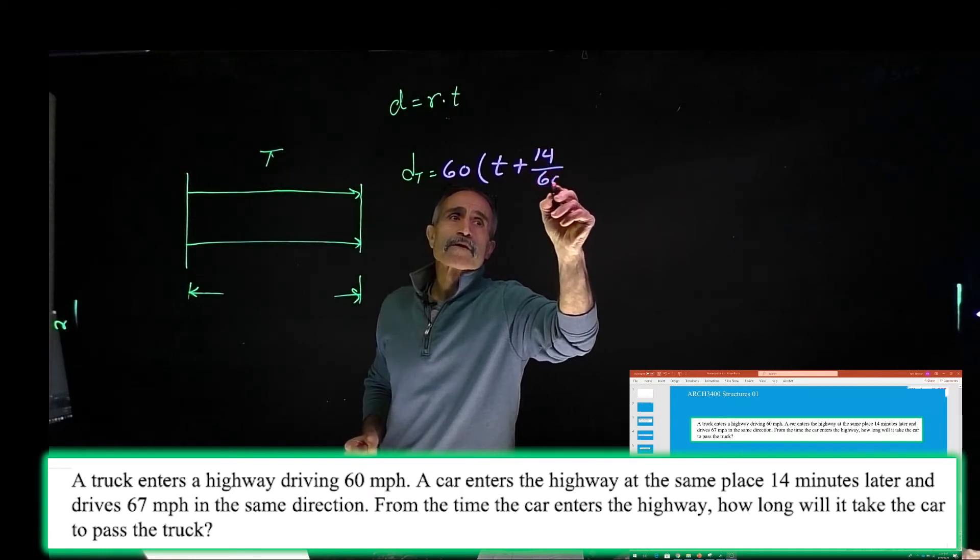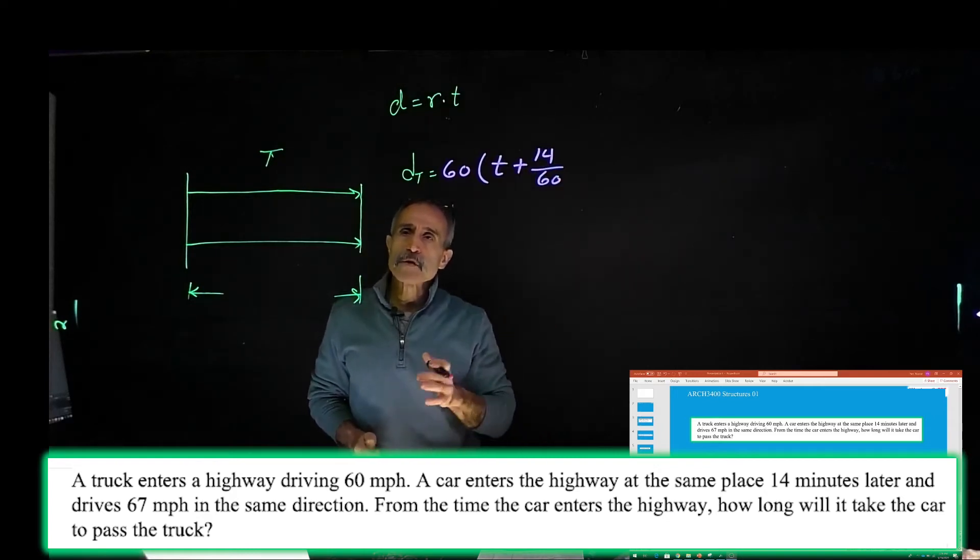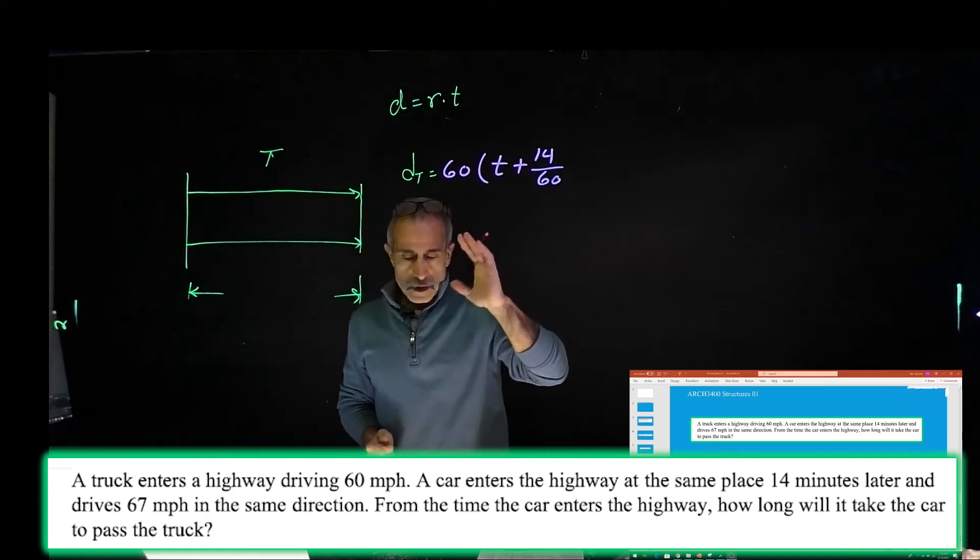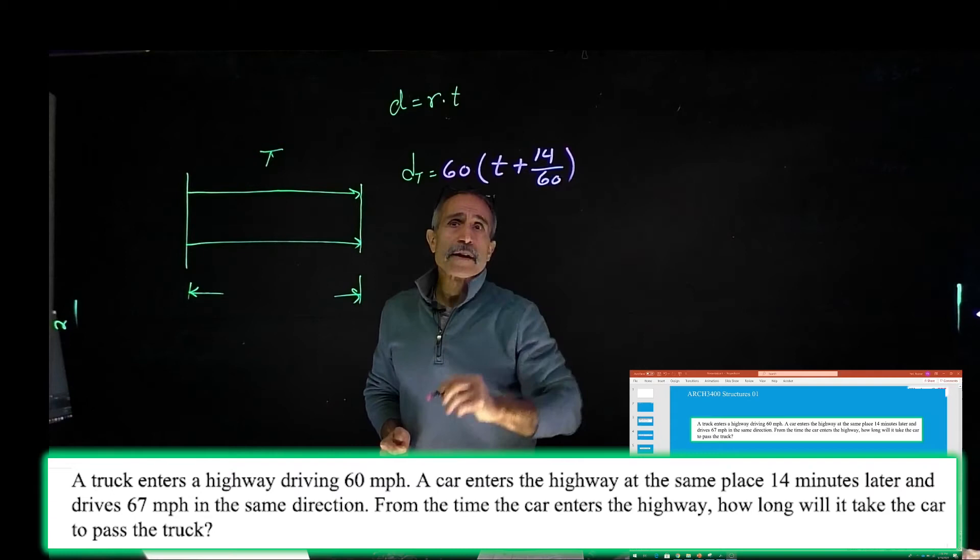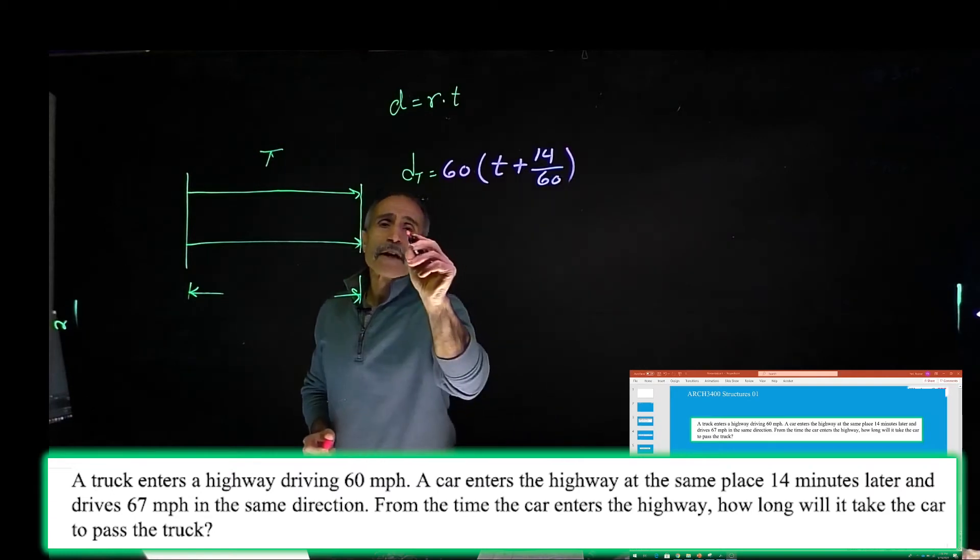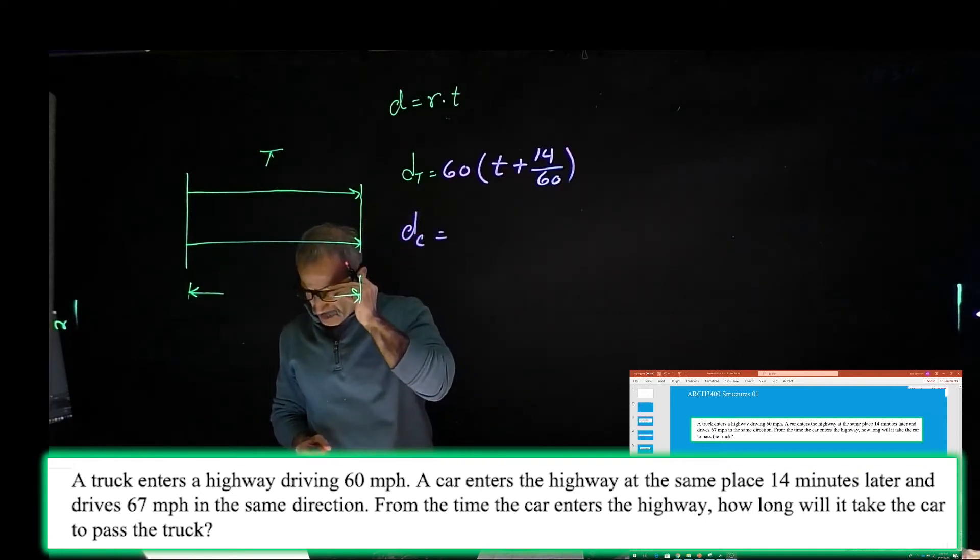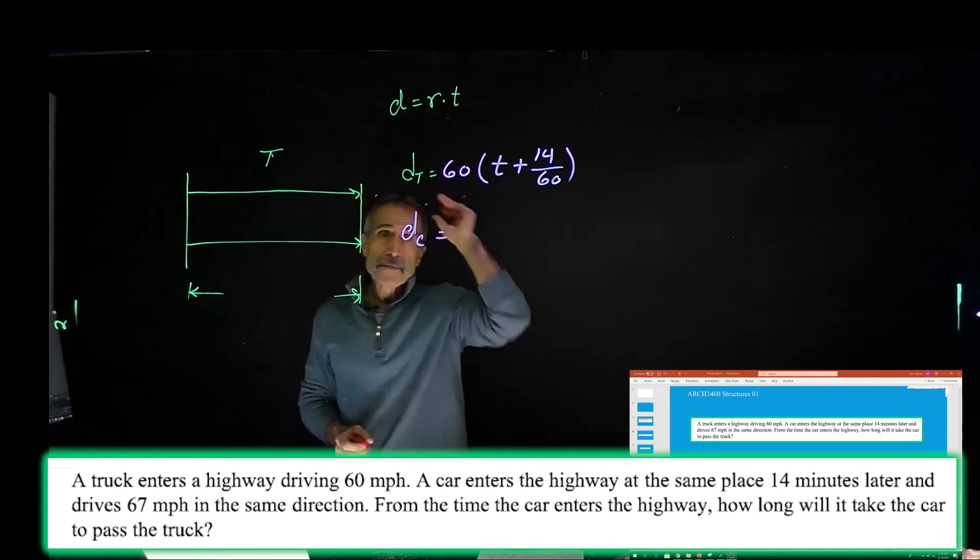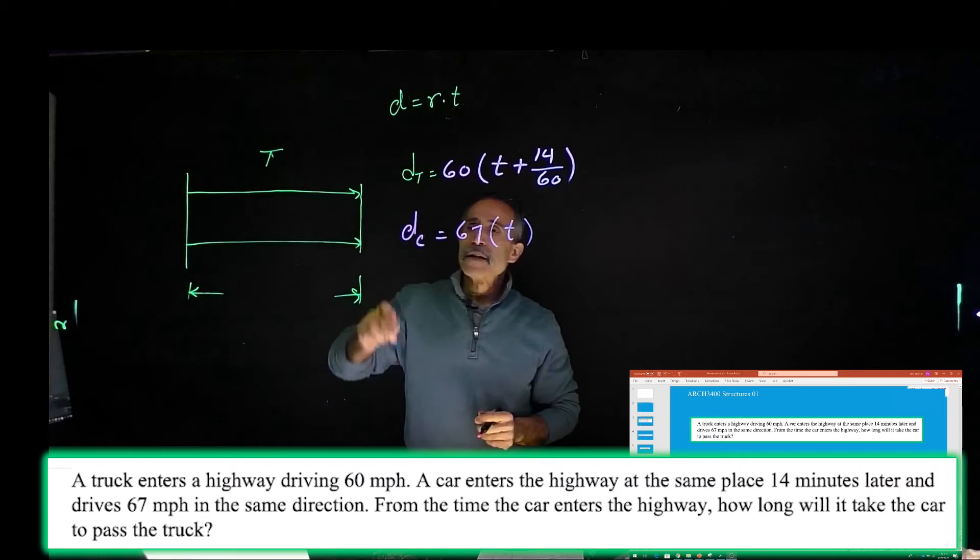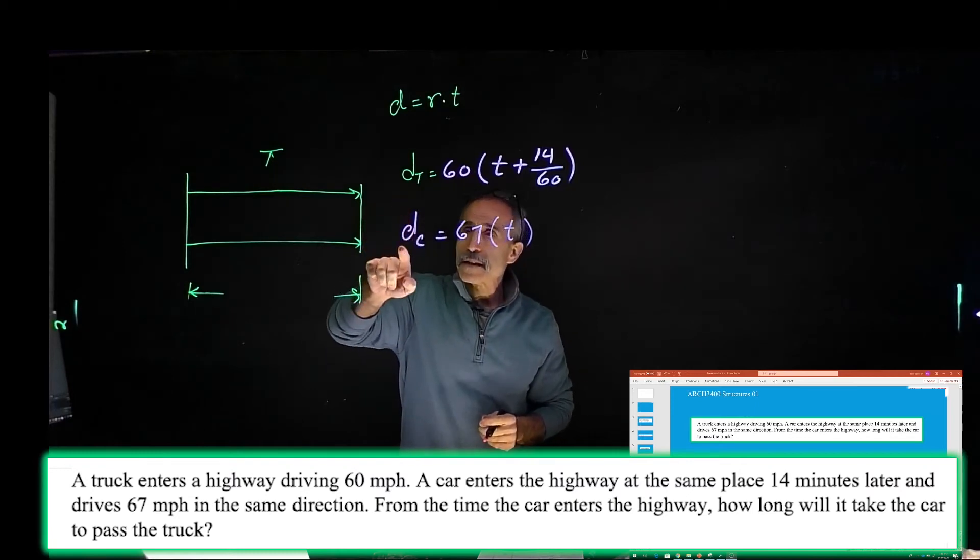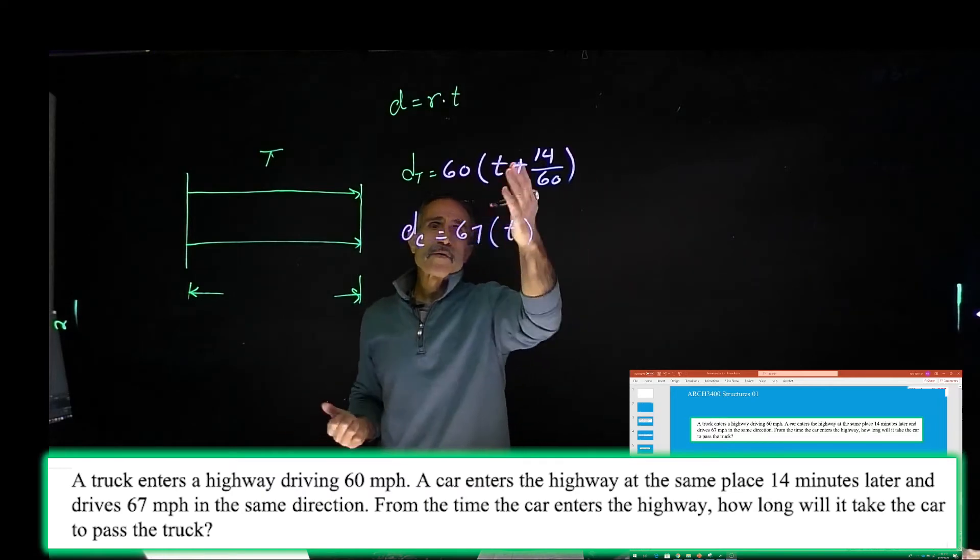To convert 14 minutes to our unit, you divide by 60. Now the vehicle, the car, DC, travels at 67 miles per hour times T. However, DT and DC, they're both equal. That's where it passes. I got two equations that equal each other.